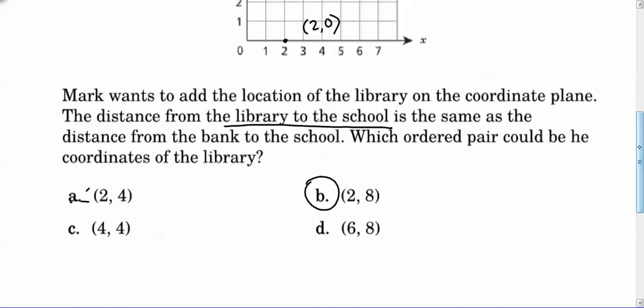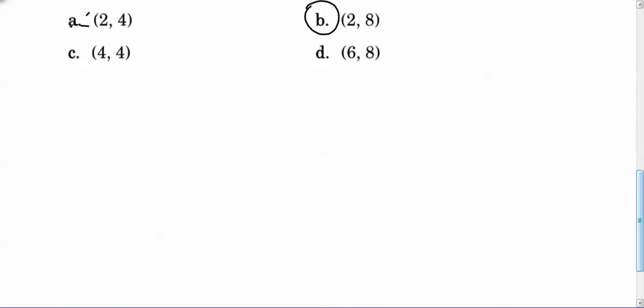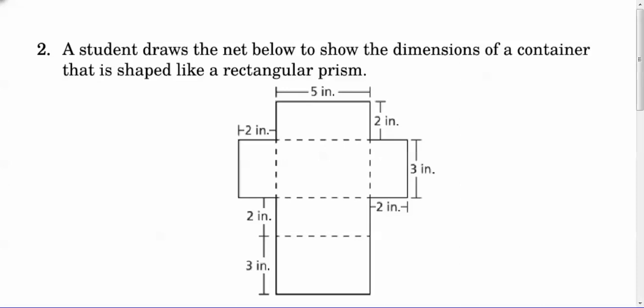So let's go ahead and do this next question, which involves surface area. It says a student draws the net below to show the dimensions of a container that is shaped like a rectangular prism. Dimensions means the measurements of a shape. So a rectangular prism means that if you were to fold this up, it'd look like a box, a closed-in box, a rectangle in 3D.